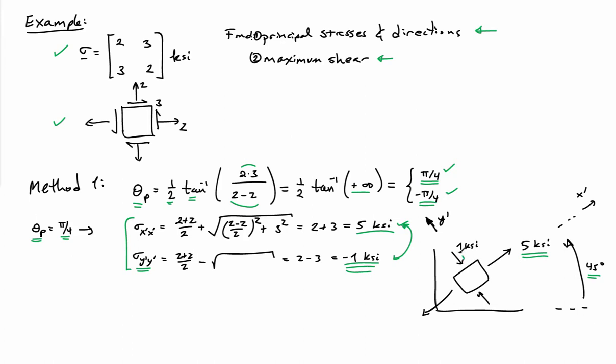And there's 5 ksi in the 45-degree direction, and there's a compressive stress of 1 ksi in the orthogonal direction. So I've gone ahead and drawn the arrows in the compressive sense, and I've written 1 ksi here and not minus 1 ksi. So that's just a pictorial representation of the principal stresses that one can compute from this state of stress over here.